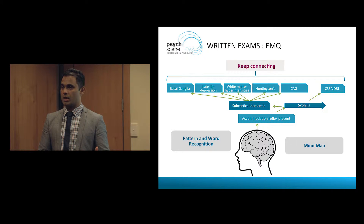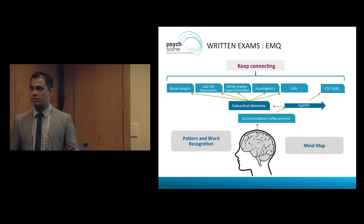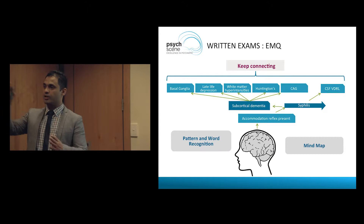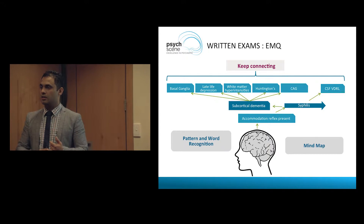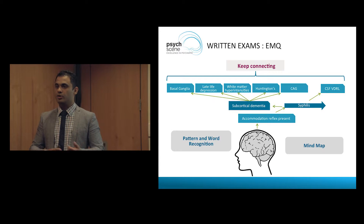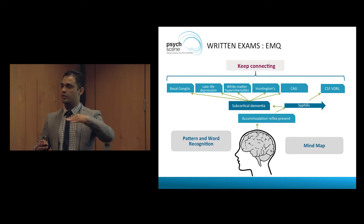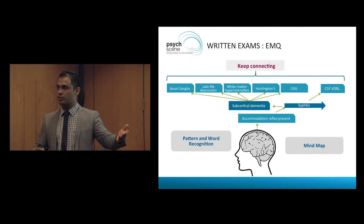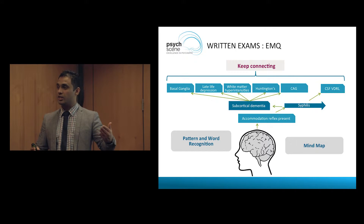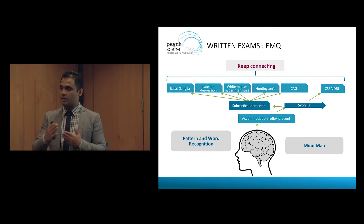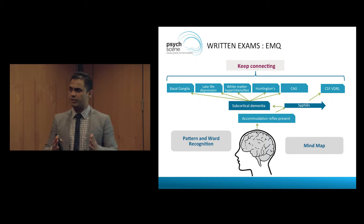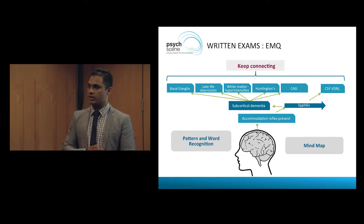What are the areas of the basal ganglia? Caudate, putamen, Huntington's, globus pallidus, substantia nigra. From there you go: substantia nigra → Parkinson's; caudate, putamen → Huntington's. Huntington's goes into genetics. What gene? Chromosome 4. What's the trinucleotide repeat? CAG. This is the kind of linking that has to happen because EMQ is about quick recognition.